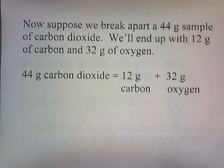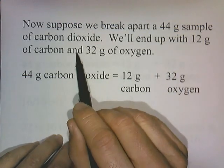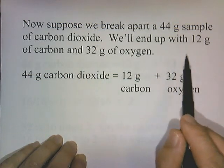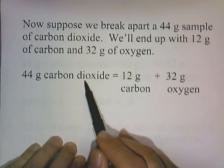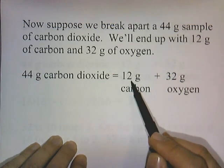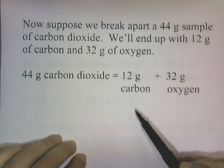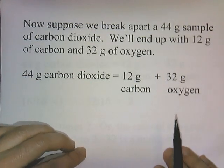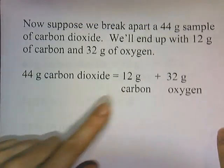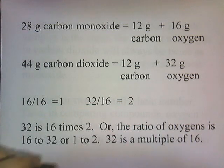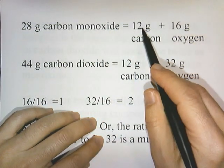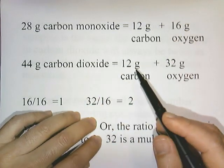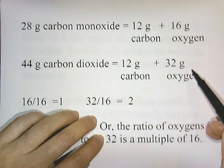Now suppose I have 44 grams of carbon dioxide. With this different compound, we'll break it apart. We take 44 grams of carbon dioxide and we'll end up with 12 grams of carbon and 32 grams of oxygen. This problem is set up so that each time we end up with 12 grams of carbon for both types of compounds. So to summarize: 28 grams of carbon monoxide breaks apart into 12 grams of carbon and 16 grams of oxygen; 44 grams of carbon dioxide breaks apart into 12 grams of carbon and 32 grams of oxygen.